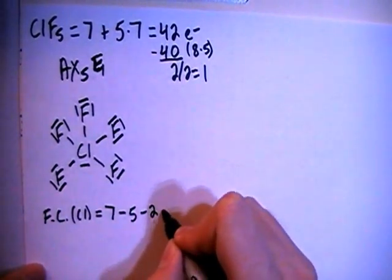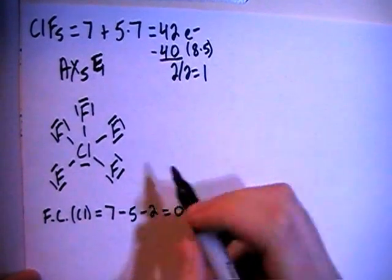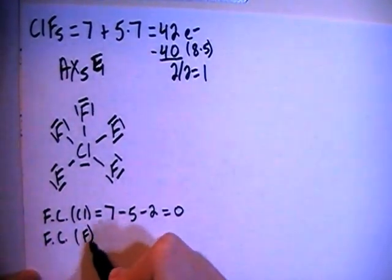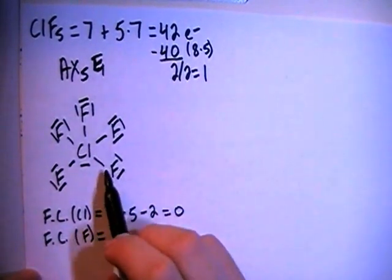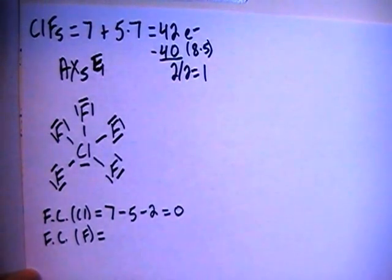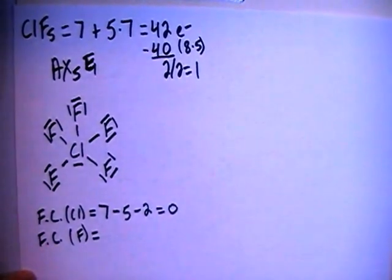And then the formal charge on each of the fluorines. And if you notice, they all have the same setup with 1 single bond and 6 non-bonding electrons. So that means that all of their formal charges will be the same.